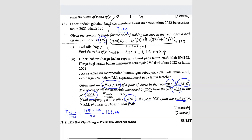Now we use this composite index with the price index formula: 168.75 equals Q2023 over Q2021 times 100. Since this is 2023 based on 2021, the price of 2023 is the selling price given as 162. So we can find Q2021, which is 162 times 100 divided by 168.75. You get the answer 96. So this RM96 is the selling price of 2021.